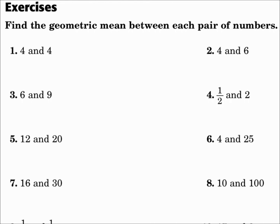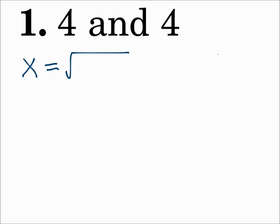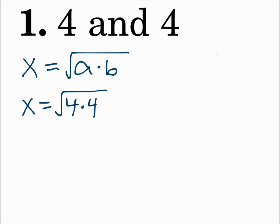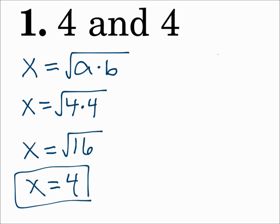Find the geometric mean between each pair of numbers. Number 1: 4 and 4. We'll use the formula. The geometric mean equals the square root of a times b. So it'll be the square root of 4 times 4, which is the square root of 16, which is 4.